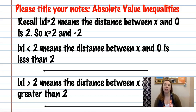Remember when we did absolute value equations, the absolute value of x equal to 2 meant that we were looking for the distance from 0 being 2. So that meant our answers were 2 and negative 2. We had two solutions.